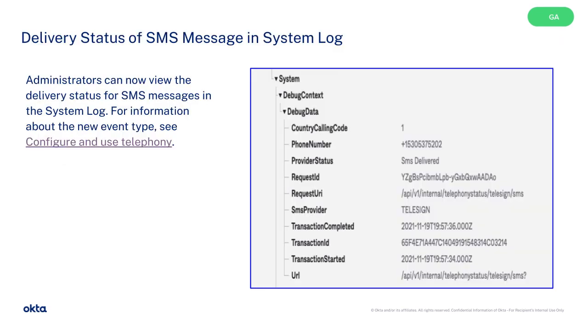Administrators can now view the delivery status for SMS messages in the system log. For information about the new event type, see Configure and Use Telephony.